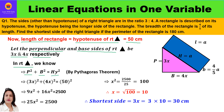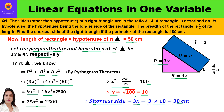Perpendicular is 3x and base is 4x, so we write (3x)² + (4x)² = 50². That gives 9x² + 16x² = 2500, so 25x² = 2500. Therefore x² = 2500/25 = 100, and x = √100 = 10. The shortest side is 3x = 3 × 10 = 30 centimeters.